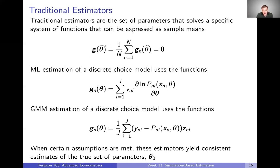We can also think of GMM as fitting into this structure. The individual-level function for GMM is just the moment conditions at the individual level — an individual-specific moment — rather than taking the average over all individuals. When we average up to the full sample, our estimator is the set of parameters that makes that total sample average moment equal to zero. These are just slightly different ways of expressing things we've already talked about.